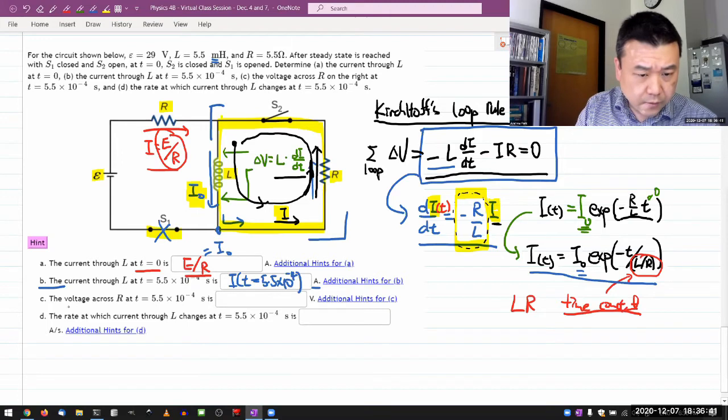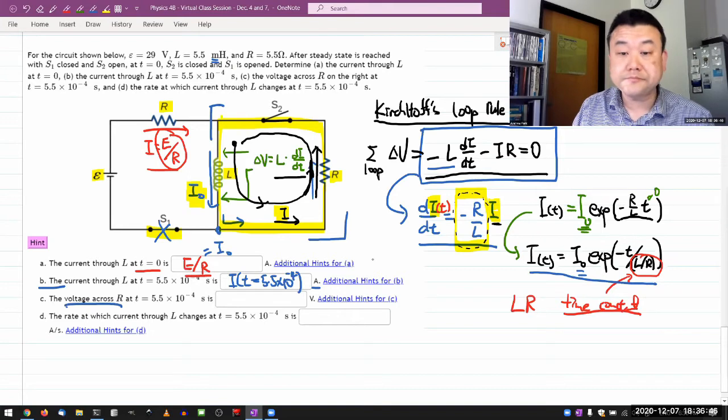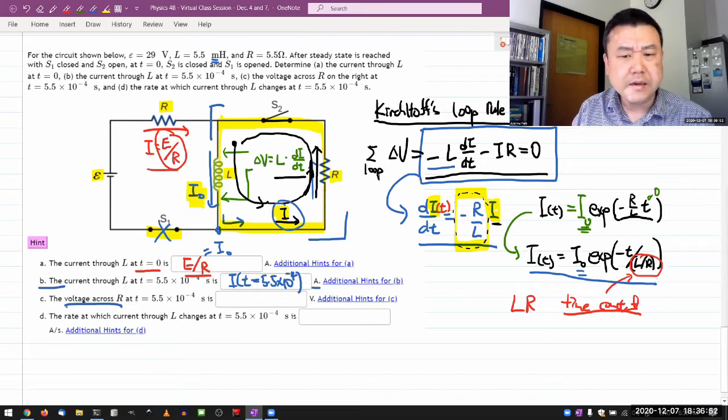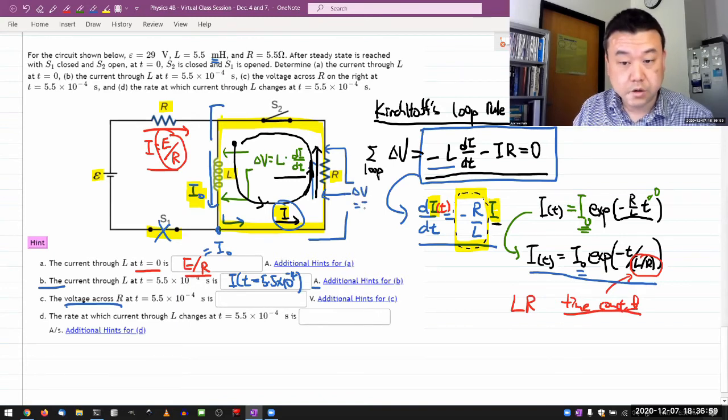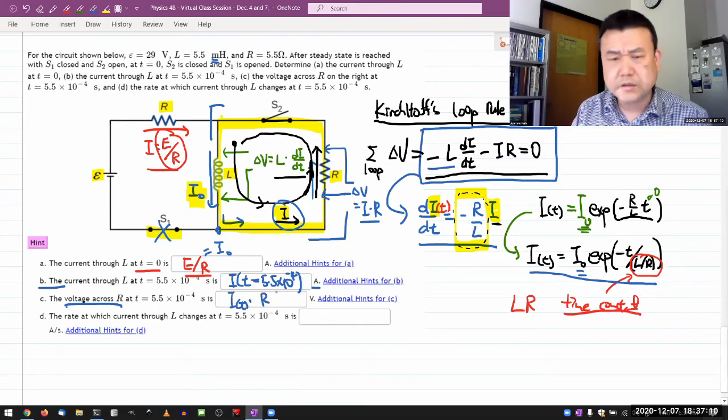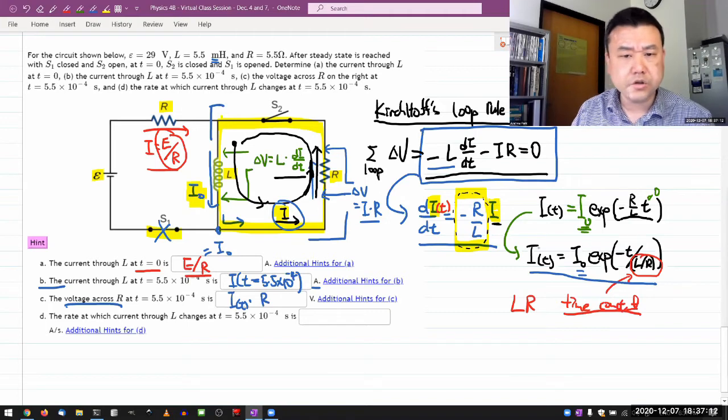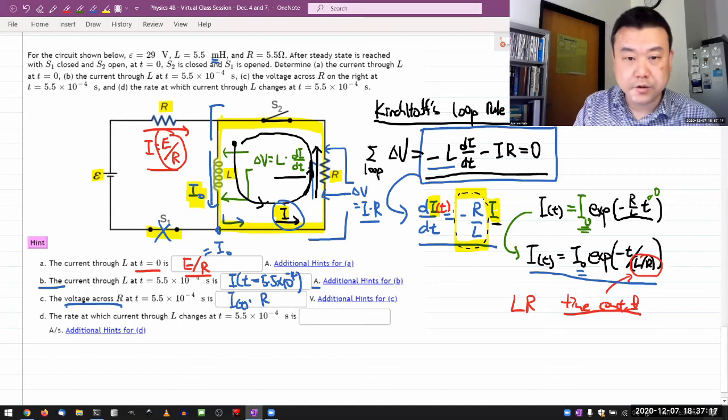And it's asking for voltage across R. For that, I would use the Ohm's law. So I already know the current or I have an answer that I put into B. Then at that same time, the voltage change across R should be Ohm's law. The current times the resistance. So you have your answer to B. Multiply that with resistance. That should give you the answer here. Again, watch the unit. Make sure you don't have any power of 10 mistake that's associated with the prefixes here.